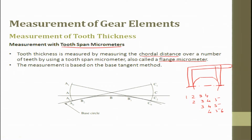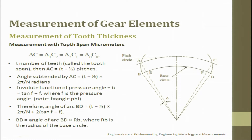The measurement is based on the base tangent method. We take a tangent and a chord which is A-B-C; the next set is A1-B1-C1, then A2-B2-C2, and so on. Using the tooth span micrometer, we measure A to C, which corresponds to the pitch circle diameter. All of A0C0, A1C1, A2C2 are the same A-C measurement we are trying to capture.